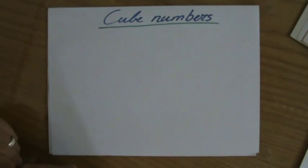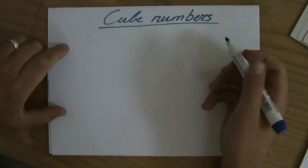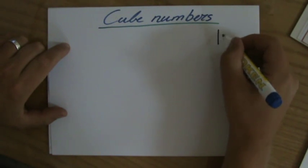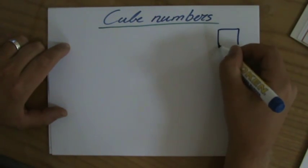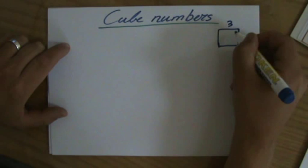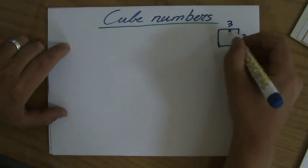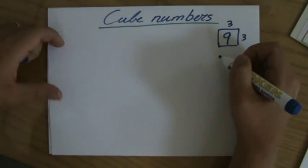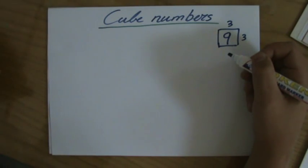I want to talk now about cube numbers very briefly. We know what square numbers are. A square number is if I have a square and the length is, for instance, 3, then the area of that square is 9. That makes 9 a square number, 3 times 3.